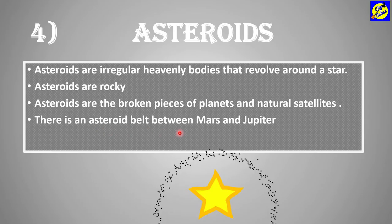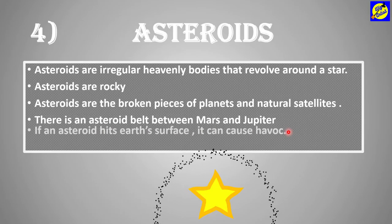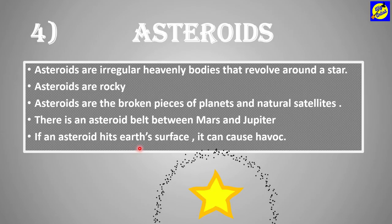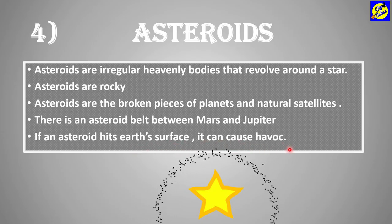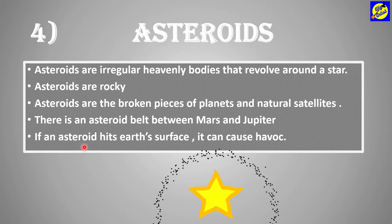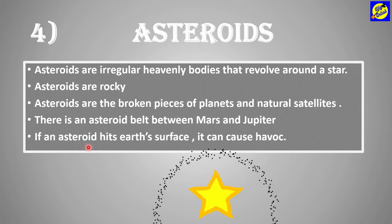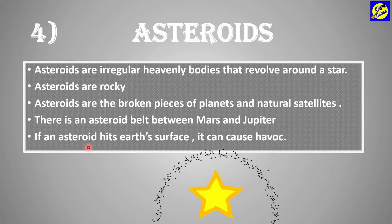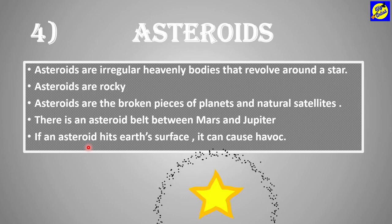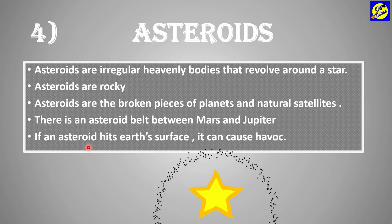There is an asteroid belt between Mars and Jupiter. If an asteroid hits the Earth's surface, it can cause havoc. The asteroid hitting the Earth's surface is believed by scientists to be a reason for the extinction of the dinosaurs.